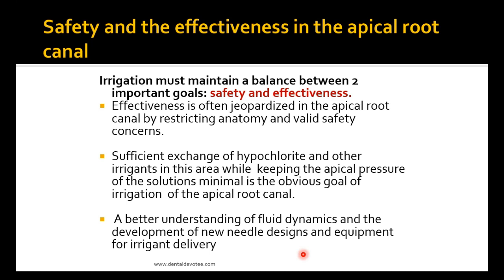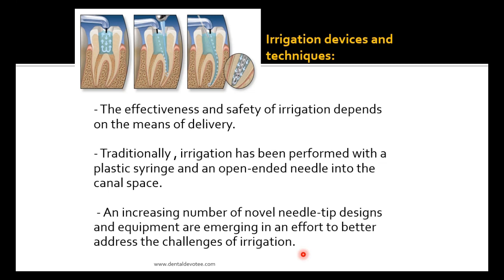Safety and effectiveness in the apical root canal: irrigation must maintain a balance between two important goals — it should be both effective and safe. Effectiveness is often jeopardized in the apical root canal by restricting anatomy and valid safety concerns. Sufficient exchange of hypochlorite and other irrigants in this area while keeping apical pressure of the solutions minimal is the obvious goal. A better understanding of fluid dynamics and the development of new needle designs and equipment for irrigant delivery is needed, as the root canal is a very small space.